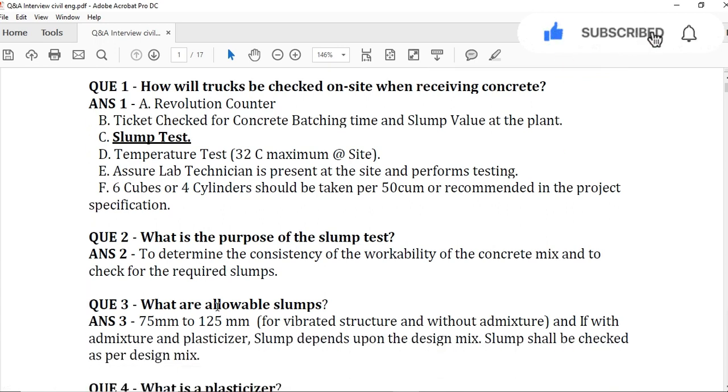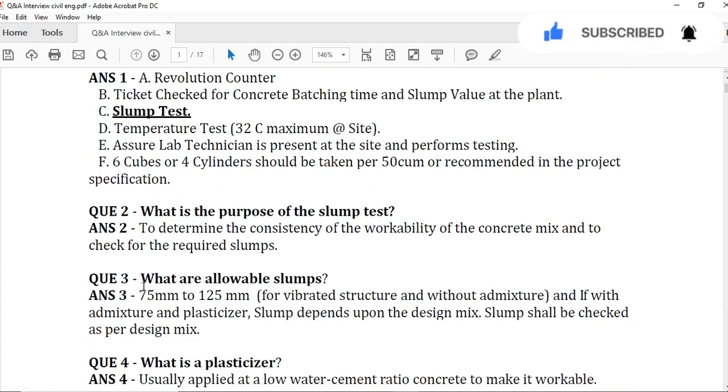Question number 3: What are the allowable slumps? Generally, as per ASTM C39, the slump values we use are from 75 mm to 125 mm. And if it's a fluid concrete or flowable concrete, I am just simplifying it for you.